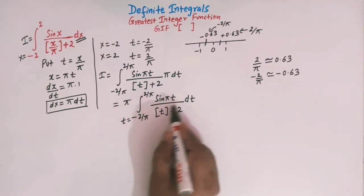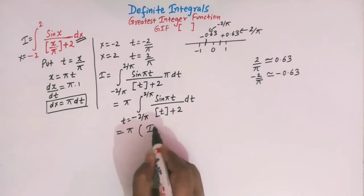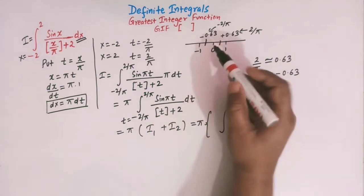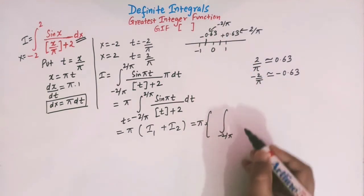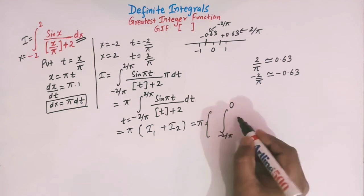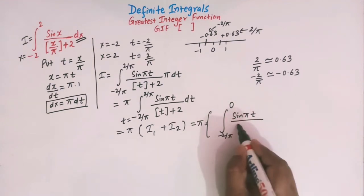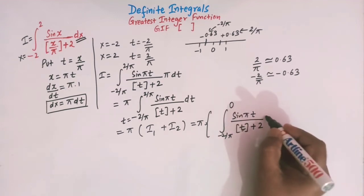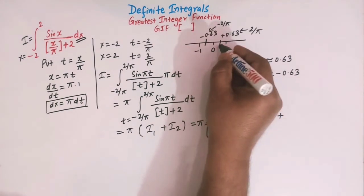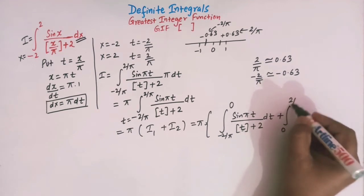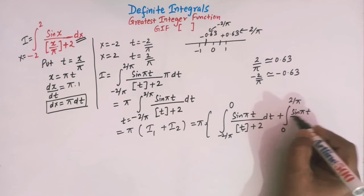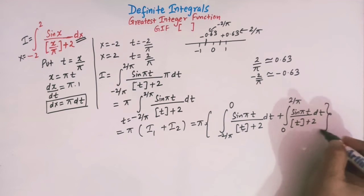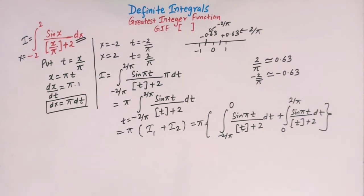We will break this integral as a sum of two integrals, I1 and I2. I1 goes from minus 2/π to 0 of sin(πt) over the greatest integer of t plus 2, dt, and I2 goes from 0 to 2/π.